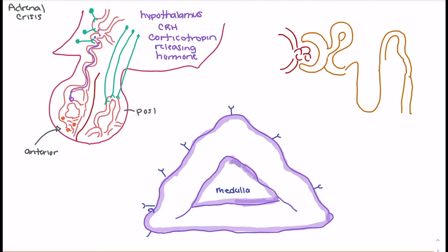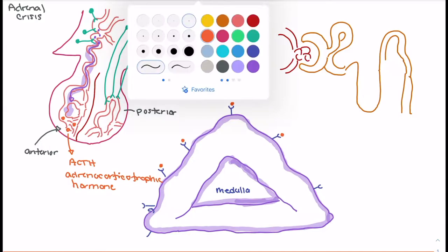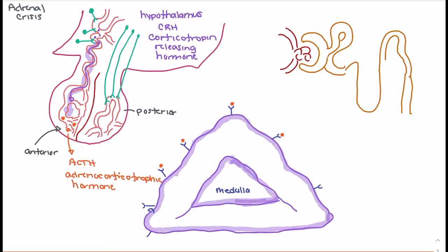Over here we have the posterior pituitary. What CRH does when it enters the anterior pituitary gland is it stimulates the release of ACTH, or adrenocorticotropic hormone. As CRH makes its way to the anterior pituitary gland, it stimulates that gland to release ACTH, which then travels to the adrenal cortex, where we see the release of mineralocorticoids and glucocorticoids.